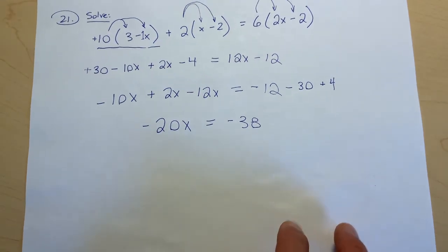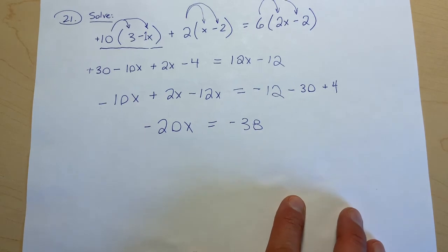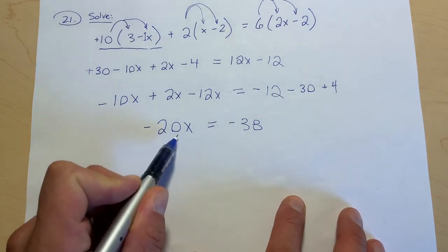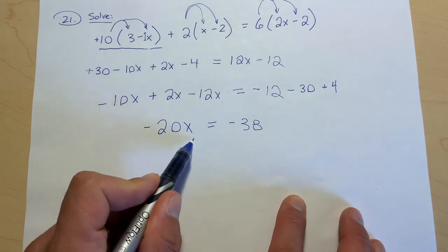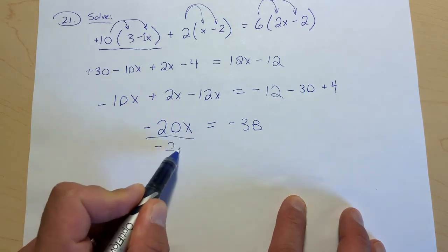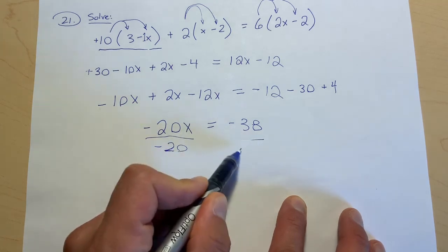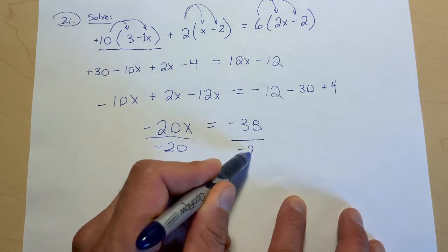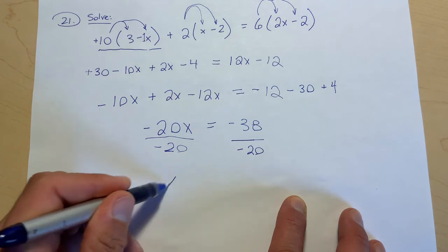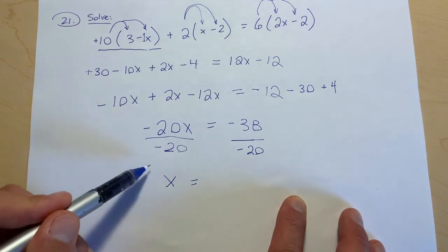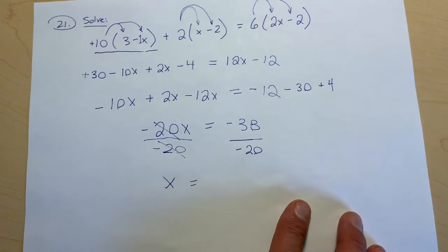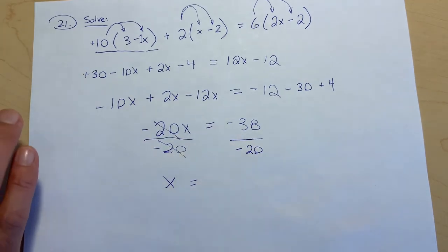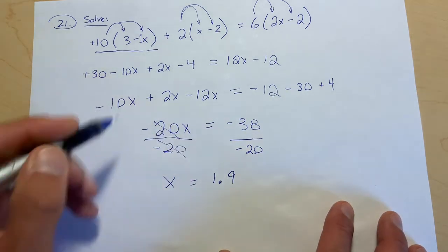Okay, we're getting there, we're getting there. Now this negative 20 times x equals negative 38, so instead of multiply we are going to divide by negative 20 and do the same to the other side. And so we're left with just x on the left because these guys cancel out, and 38 divided by negative 20 gives us positive 1.9.